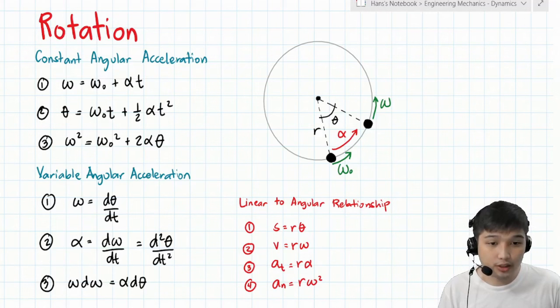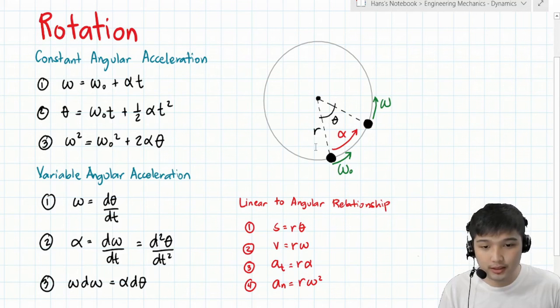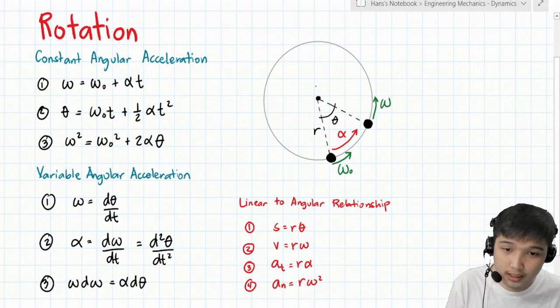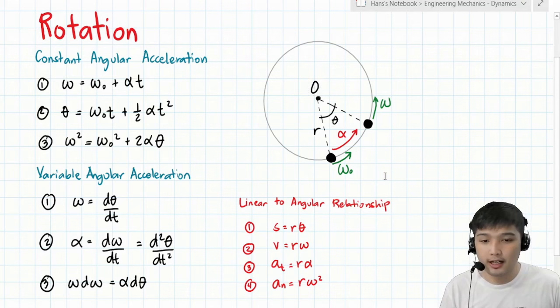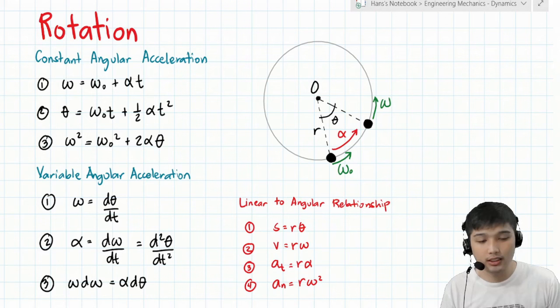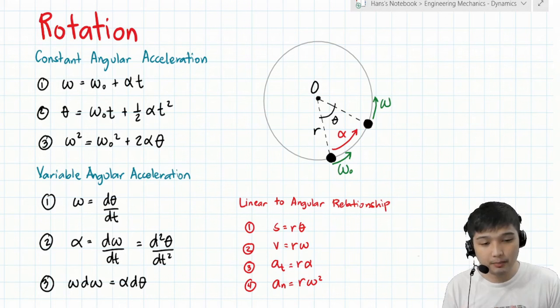Hi guys. So for today, our discussion is about rotation. We have a particle at this position and it is rotating about a fixed point, which we call point O. What we will discuss here is velocity, acceleration, and position. But for rotation, acceleration, velocity, and position are better expressed in terms of angular acceleration, angular velocity, and angular displacement.